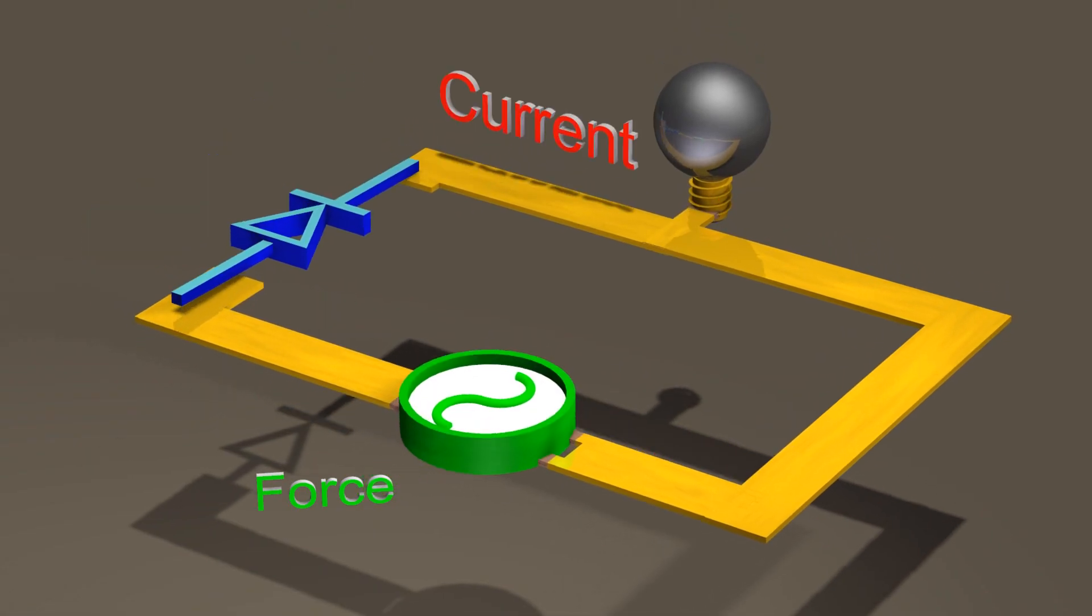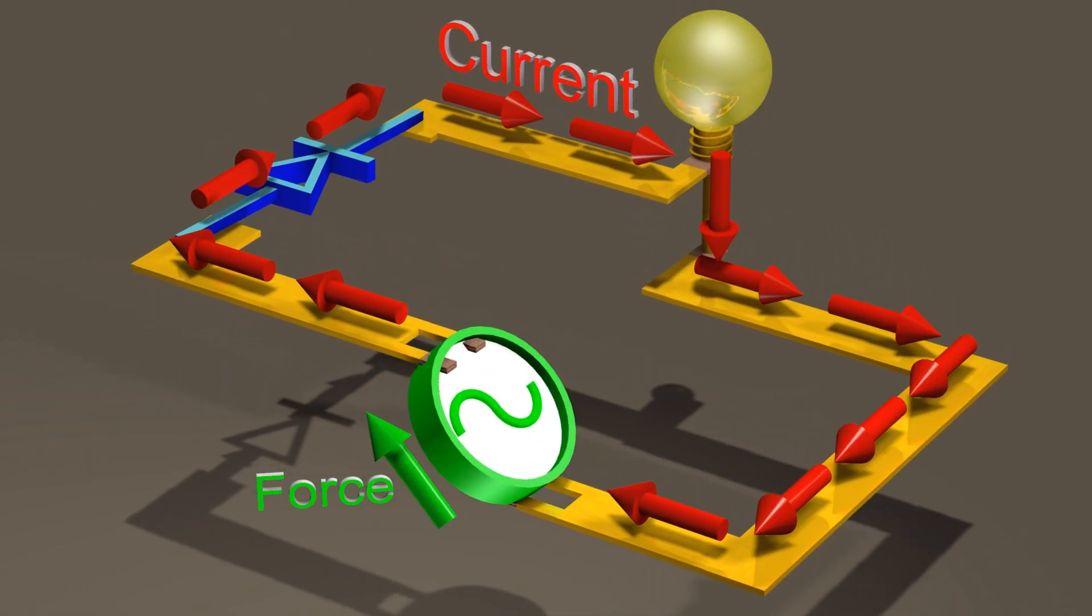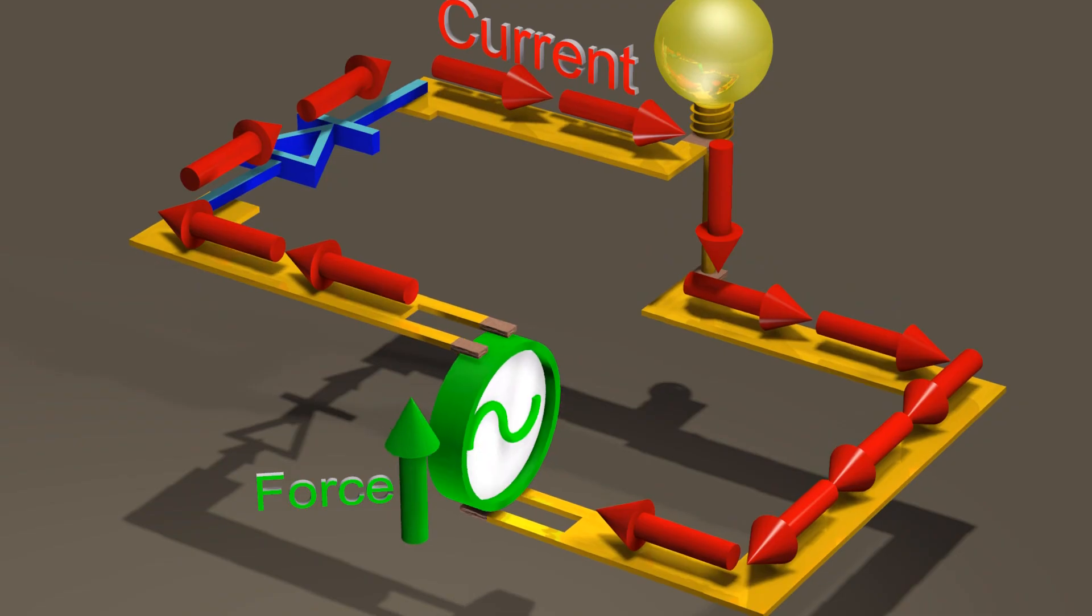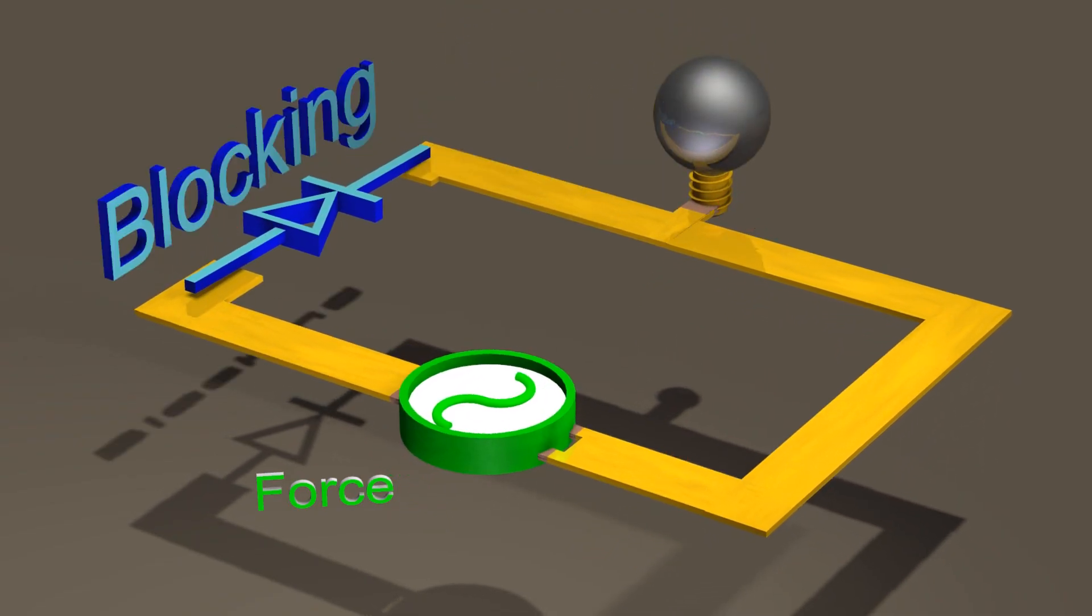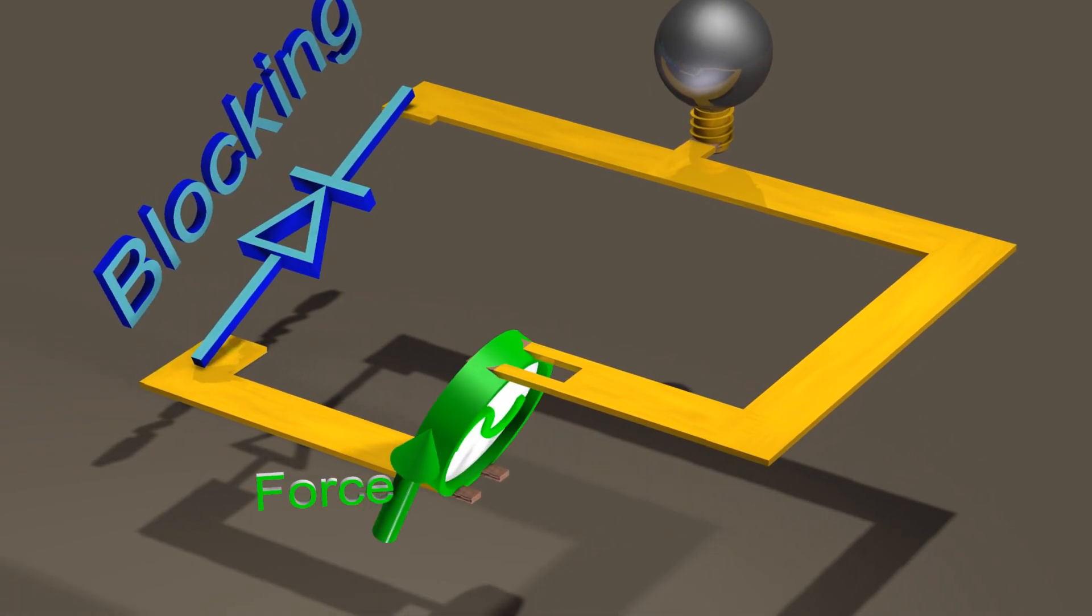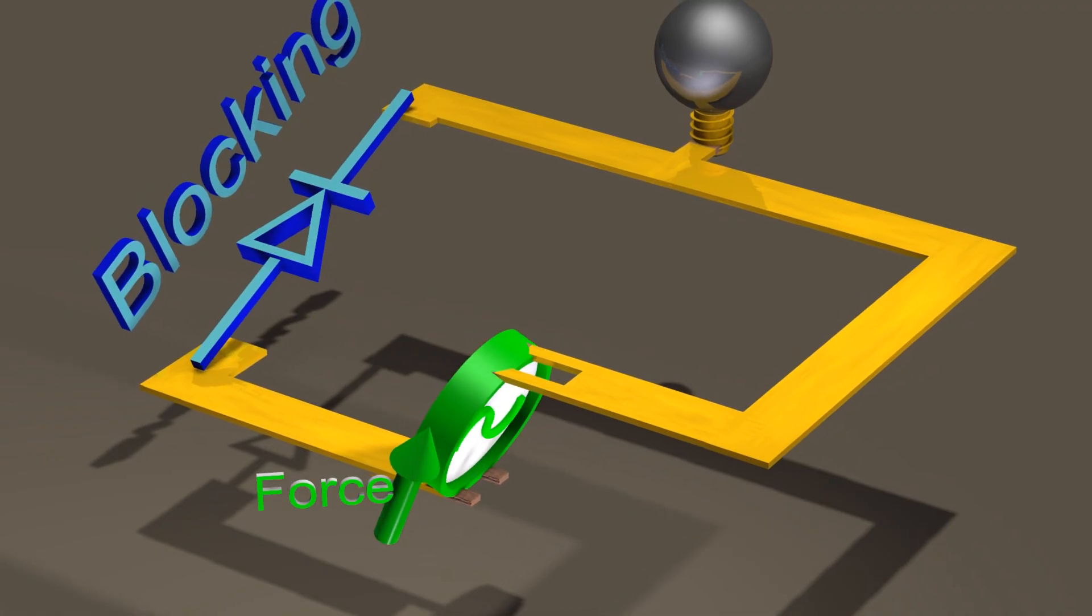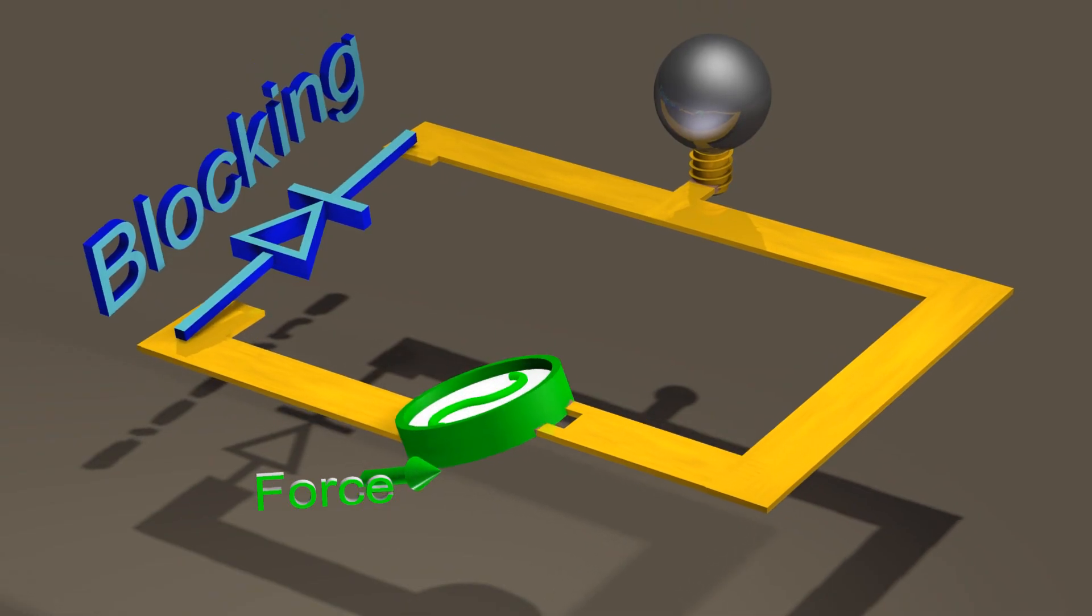When current flows in the forward direction, both sides of the diode are at about the same voltage. On the other hand, when the diode blocks current from flowing in the backward direction, the different sides of the diode can be at significantly different voltages.